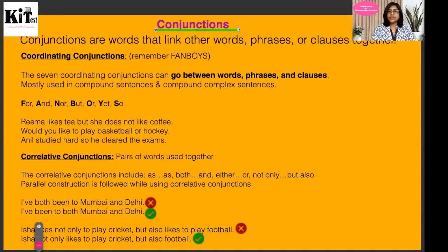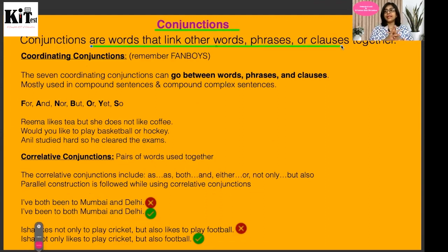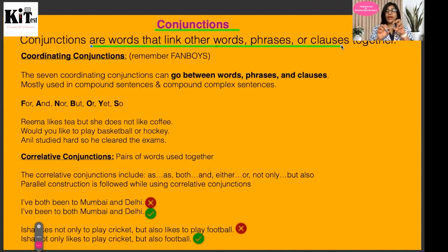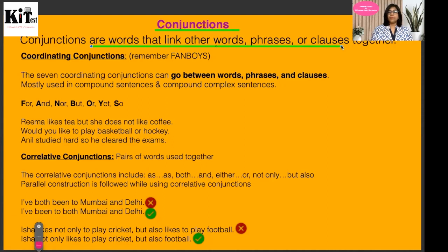What are conjunctions? Conjunctions are the words that link other words, phrases, or clauses in a sentence. These words work to add — you have to add two sentence parts, two clauses, or make another connection with other words. So connectors or joining words are known as conjunctions.